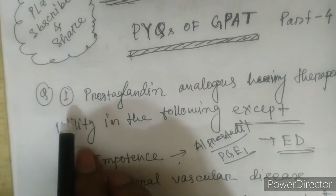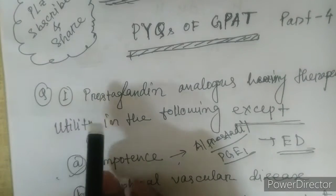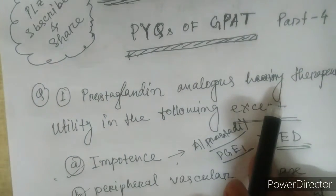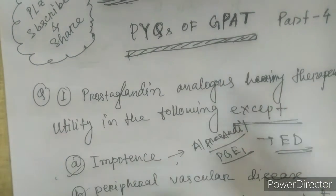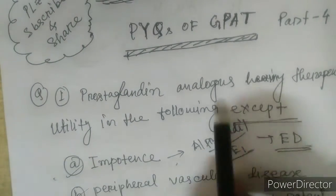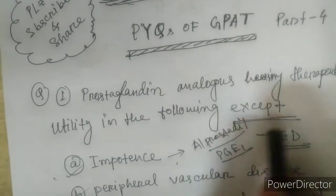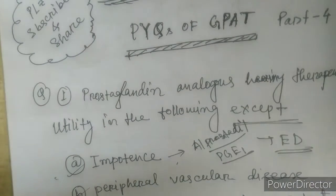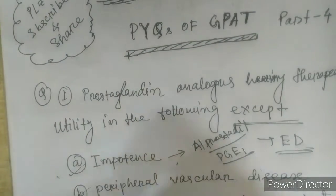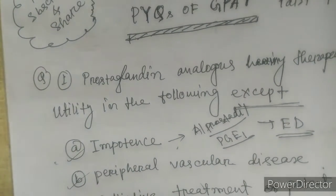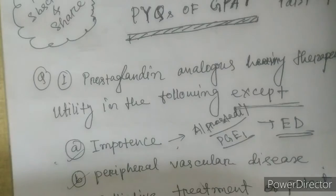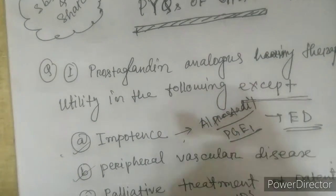Today's first question is from pharmacology. It says: 'Prostaglandin analogs having therapeutic utility in the following EXCEPT.' So they are asking which condition is NOT treated by prostaglandin analogs. Most of the time with this type of question we make a mistake — if 'except' is written at the end, or 'incorrect one' is asked, we still give the answer for the correct one out of excitement when we see the options.